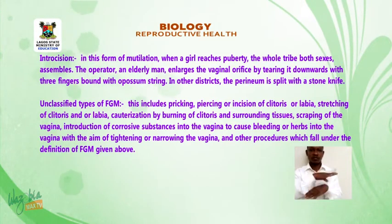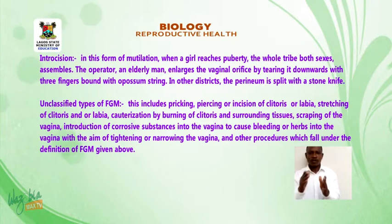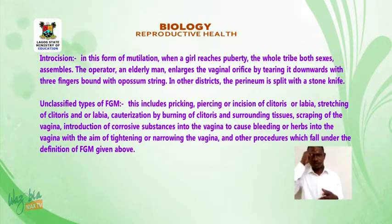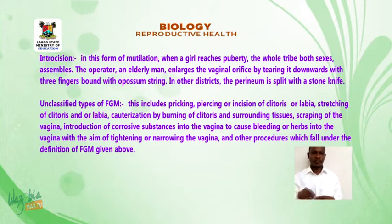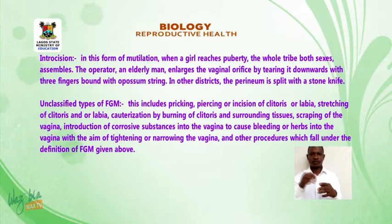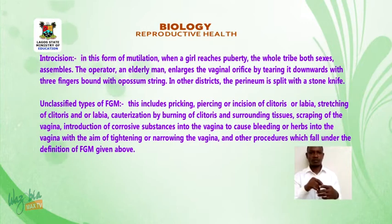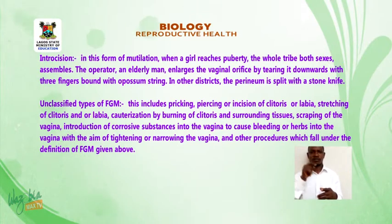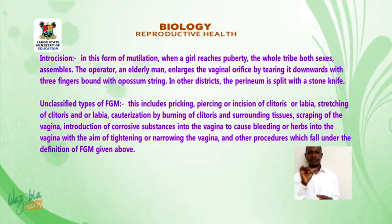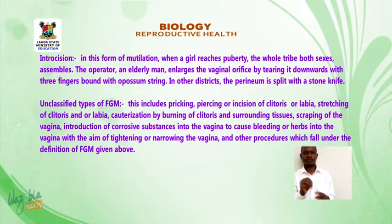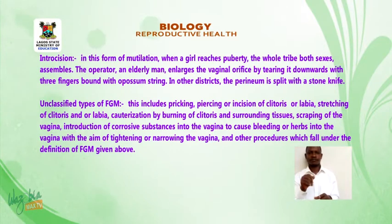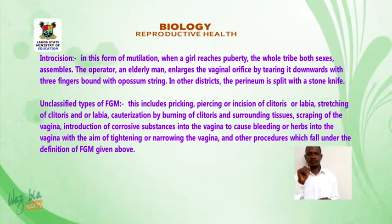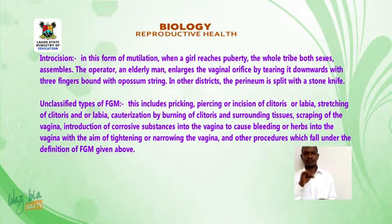In introcision, the operator — an elderly man — enlarges the vaginal orifice by tearing it downwards with three fingers bound with opossum string. In other districts, the perineum is split with a stone knife. Type five, unclassified types of FGM, includes pricking, piercing, or incision of the clitoris or labia, and stretching of the clitoris or labia.